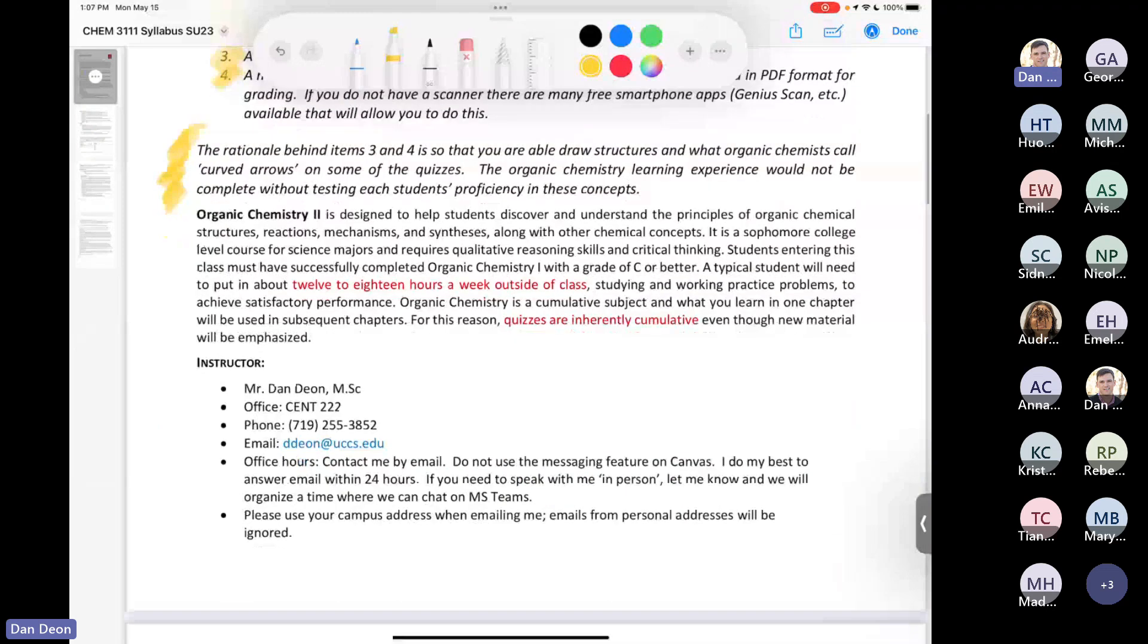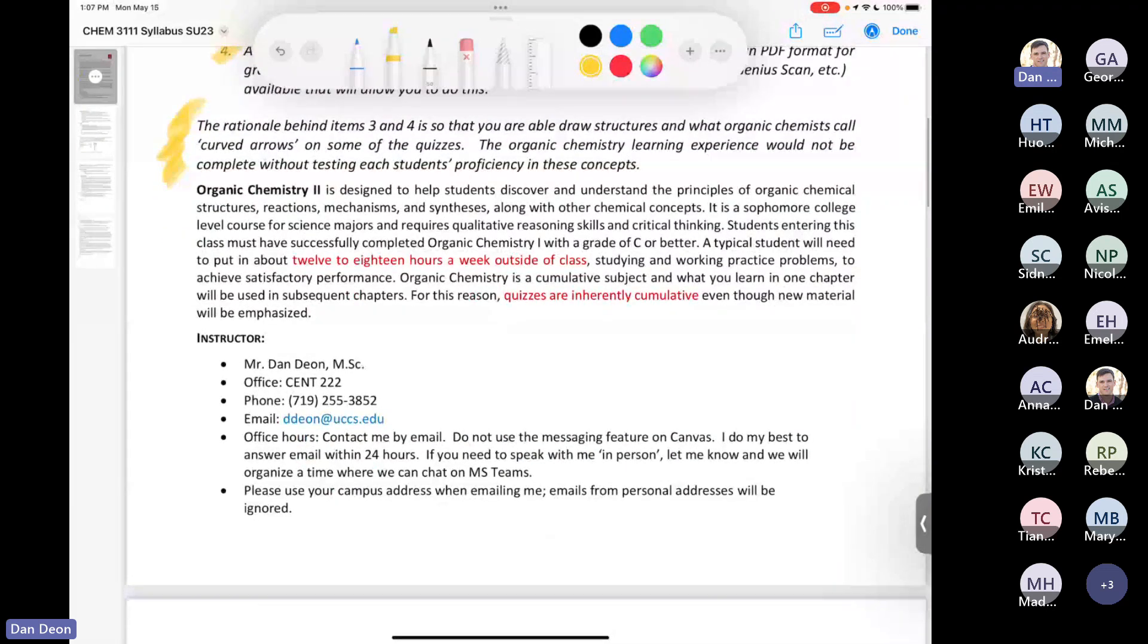The rest is things that you're probably used to, because I know that most of you, not everybody, but I know that most of you took Organic Chemistry 1 with me or Dr. Anderson. And you know, this blurb here where it says in this class, you need to spend 12 to 18 hours a week outside of the class. That's for the 16 week class. Okay, so you can essentially double it or almost double it for the summer course.